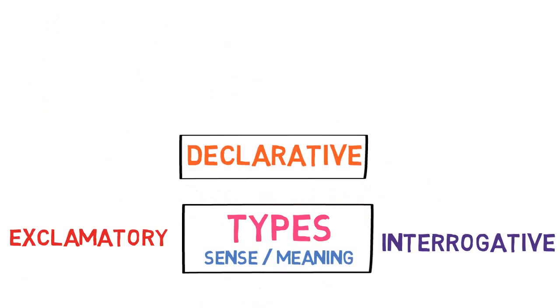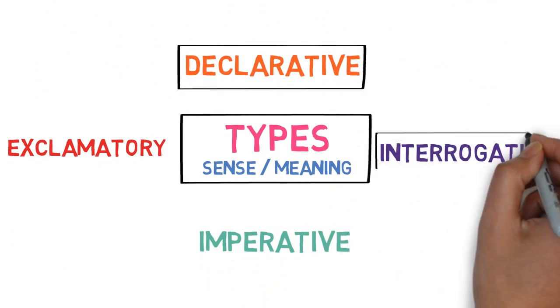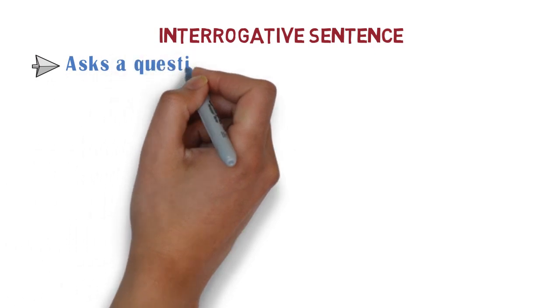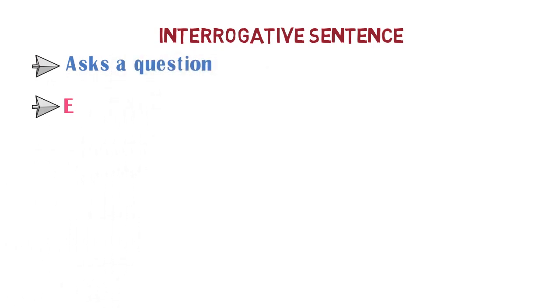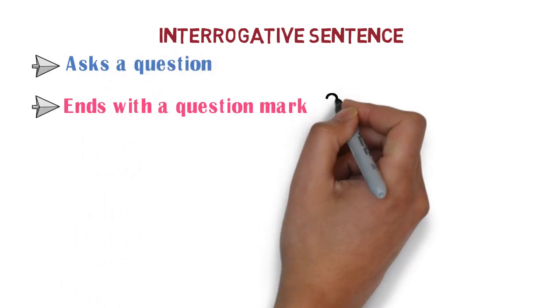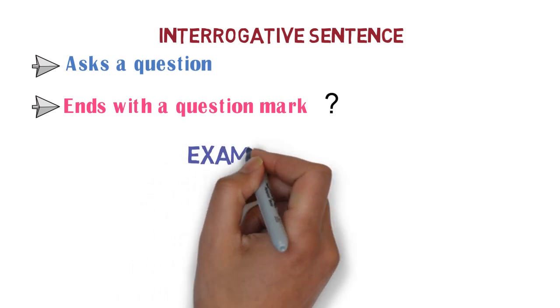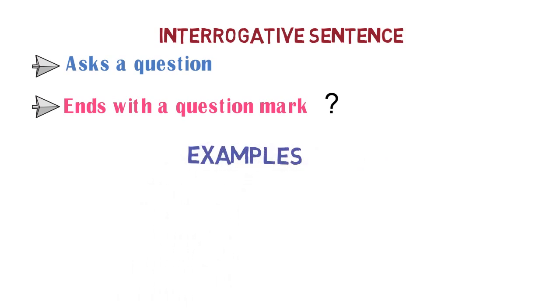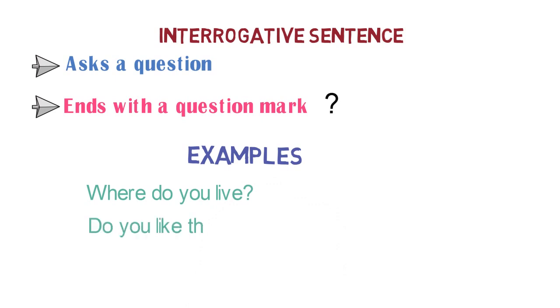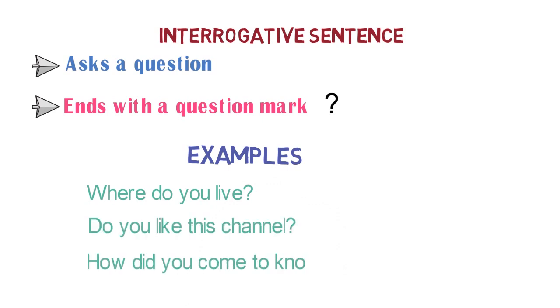Now let's look into the second type of sentence: the interrogative sentence. An interrogative sentence asks a question. It ends with a question mark. Examples of interrogative sentences include: 'Where do you live?', 'Do you like this channel?', and 'How did you come to know about the course?'